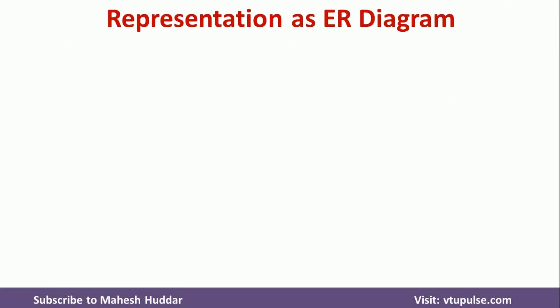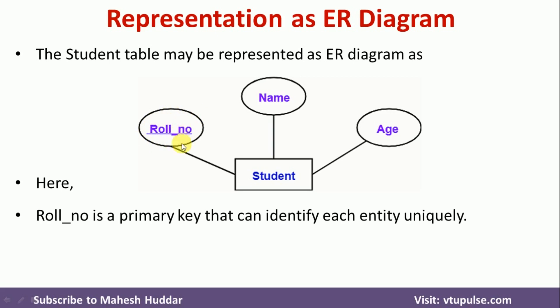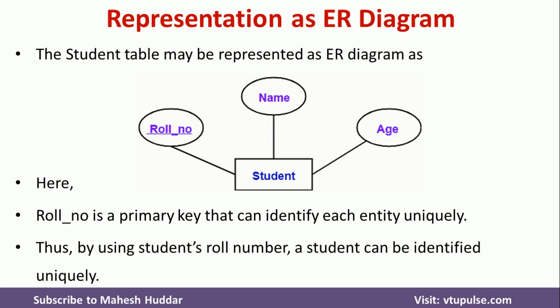Now we will try to understand how to represent a table in the form of ER Diagram. The Student Table can be represented like this: Student is the Entity Set, represented with a Rectangle. Role Number, Name, and Age are the attributes, represented with Ovals. The underline below Role Number indicates that Role Number is a Primary Key, which can be used to identify each row uniquely, since we cannot have repetition of Role Number. With this unique value, we can identify each student uniquely.